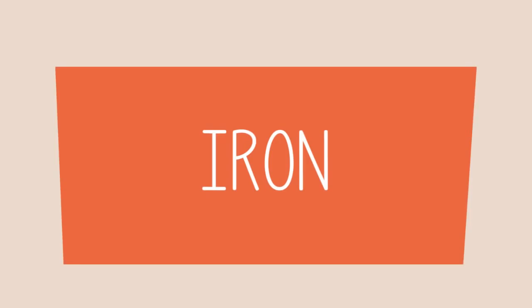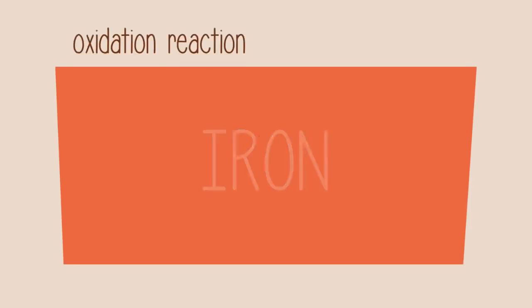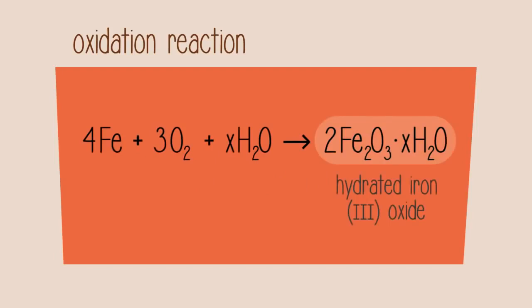So what has happened here? The iron has undergone an oxidation reaction, forming hydrated iron 3 oxide or rust. Salt and acid act as a catalyst for this reaction, which is why the nail in the second test tube formed more rust than the nail in the first test tube.